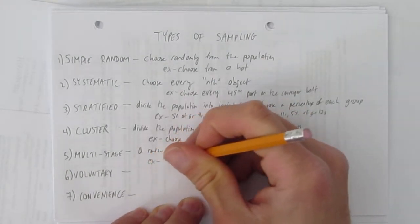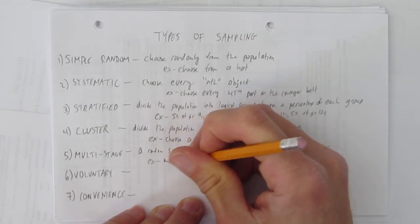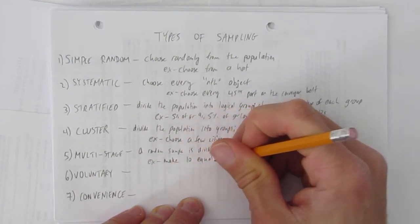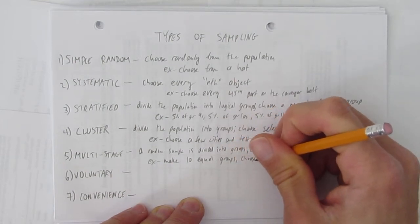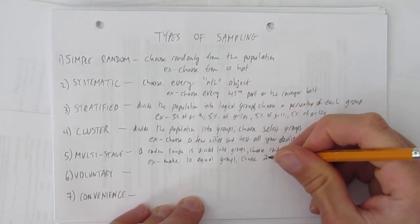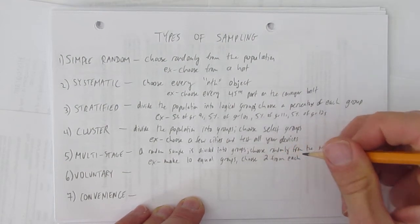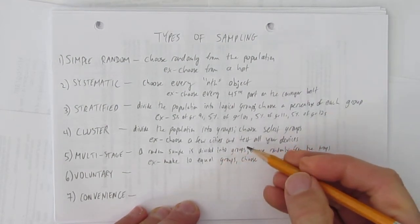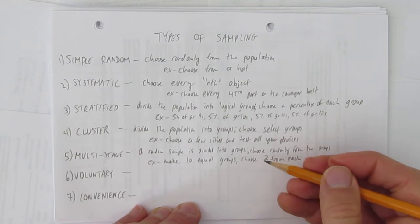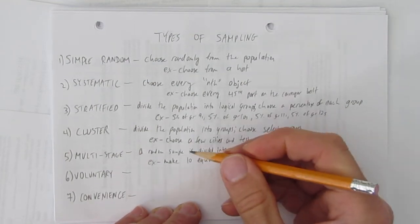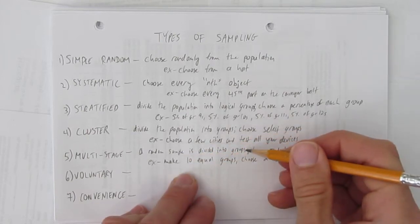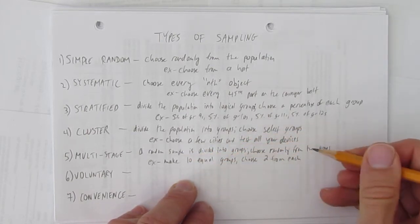So, for example, make 10 equal groups and choose 2 from each. So, here you take your random sample, it's like double randomized, just to ensure it's sort of even stronger that we're getting a truly random sample. You'd randomly divide them into groups and then randomly pick from the groups.